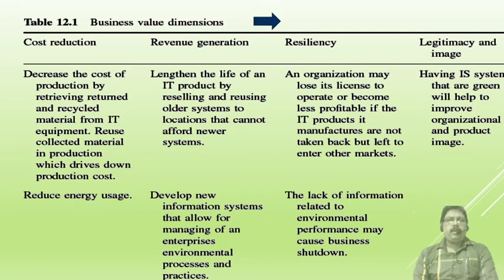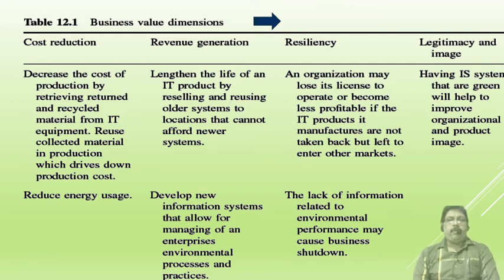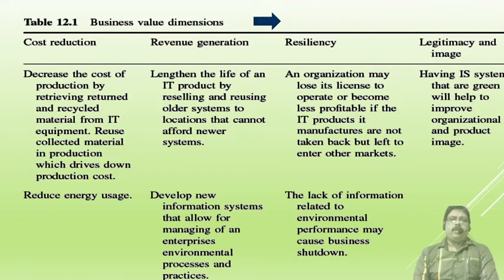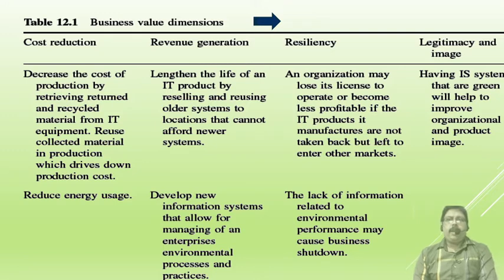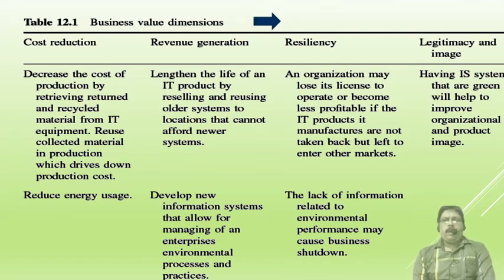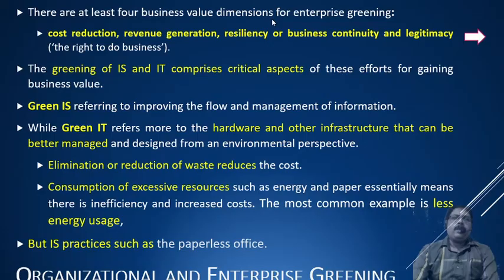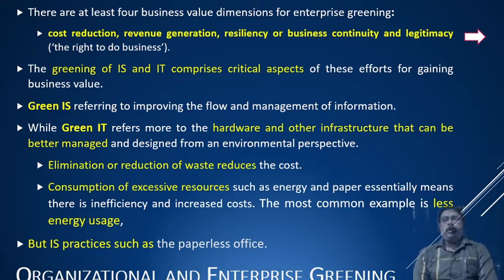The third factor is resiliency. An organization may lose its license to operate or become less profitable if the IT products it manufactures are not taken back but left to enter other markets. Even a lack of information related to environmental performance may cause a business shutdown. The last dimension is legitimacy and image: having IS systems that are green will help improve organizational and product image. So every business has four dimensions: cost reduction, revenue generation, resiliency or business continuity, and legitimacy.